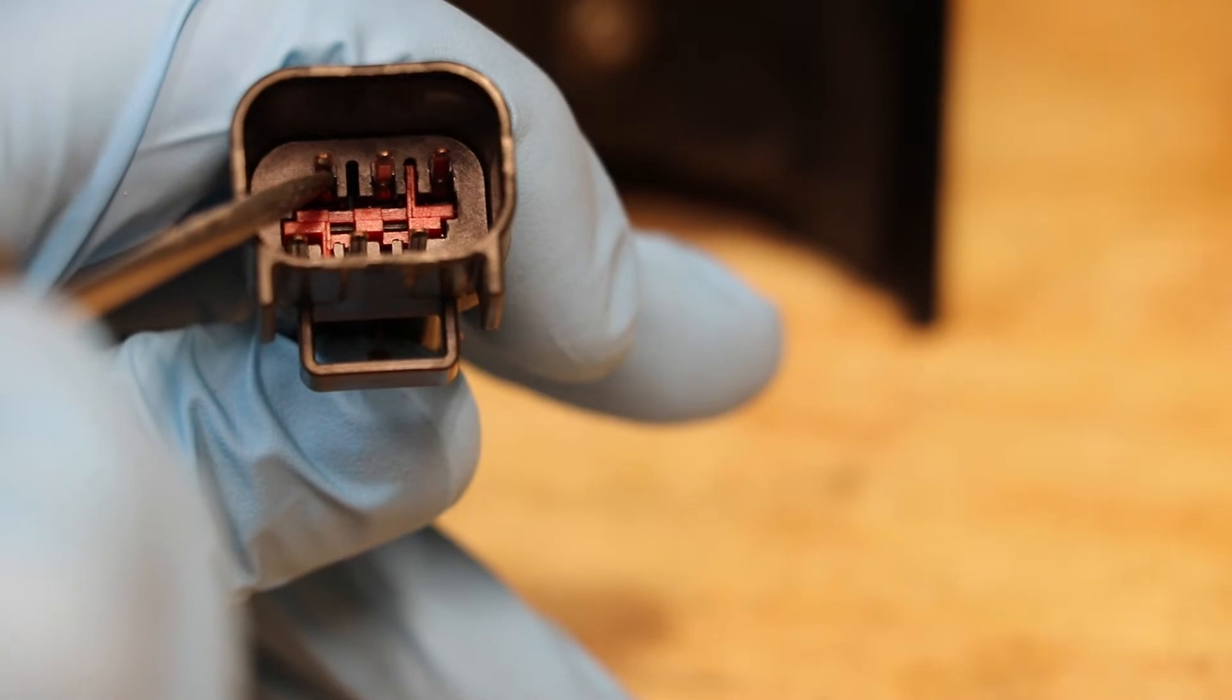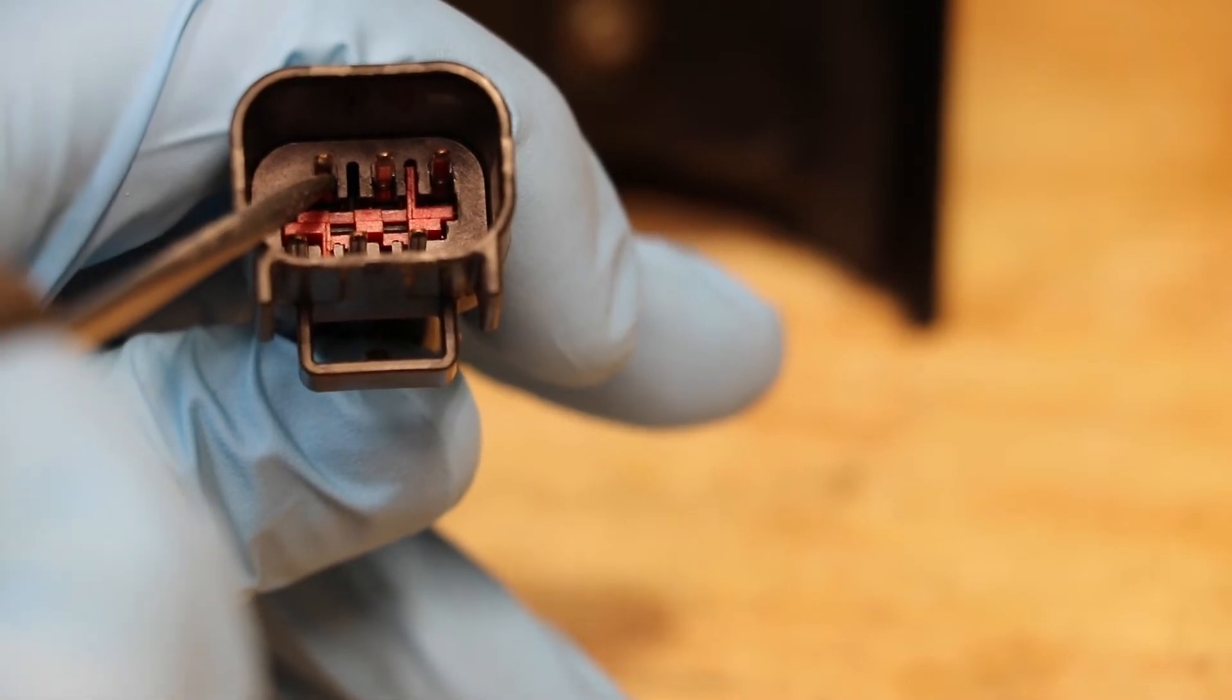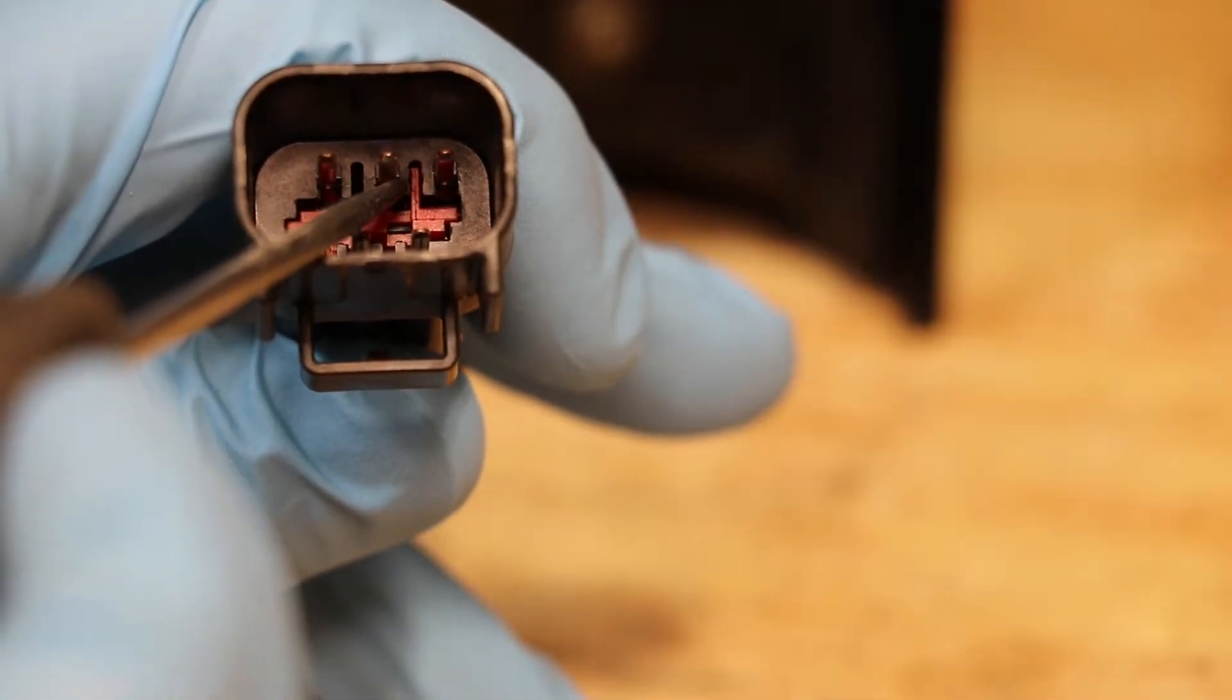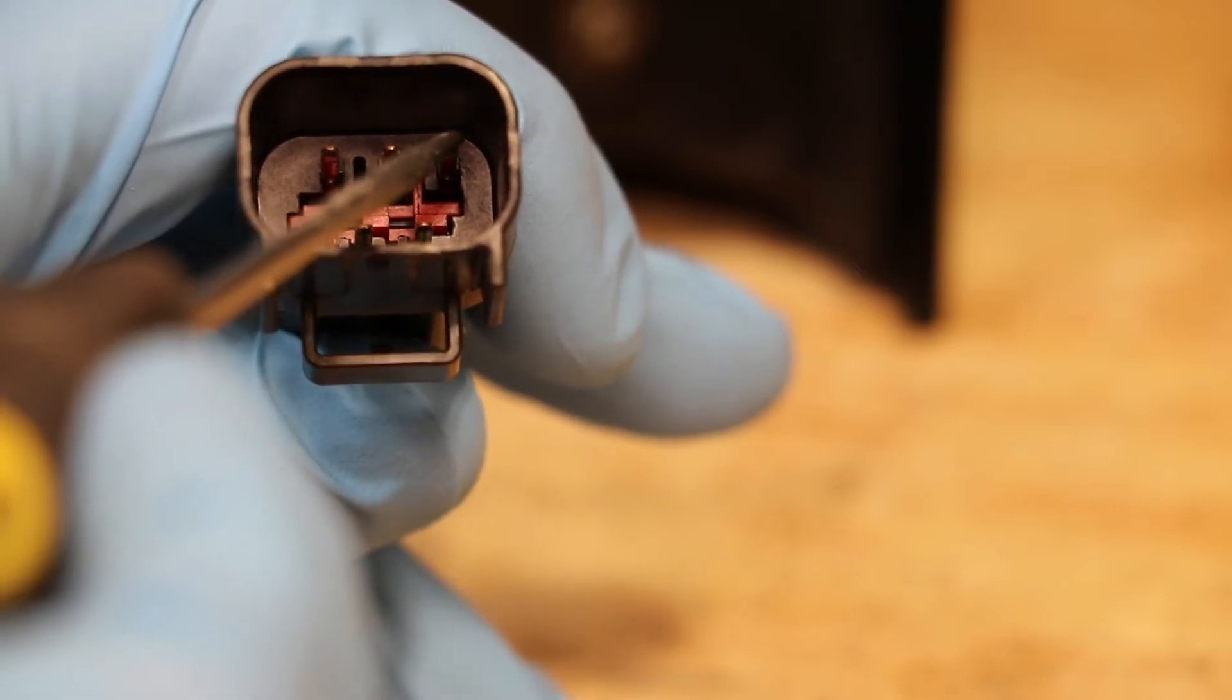On the top row, the first pin is the positive for the turn signal. The second pin is the positive for the back fog light. The third pin is the ground.